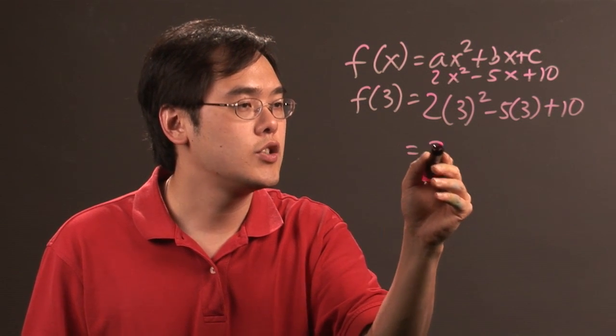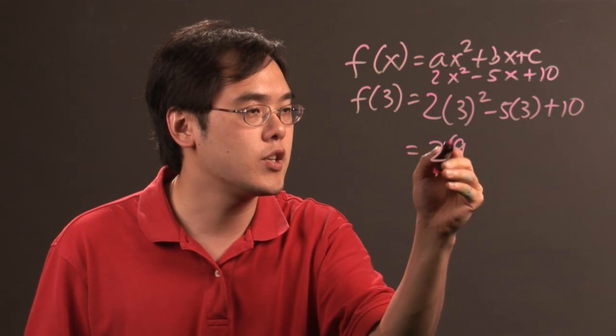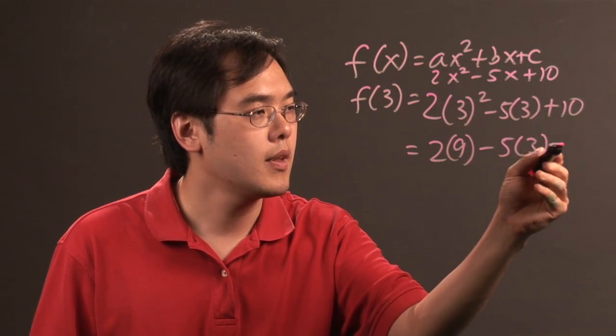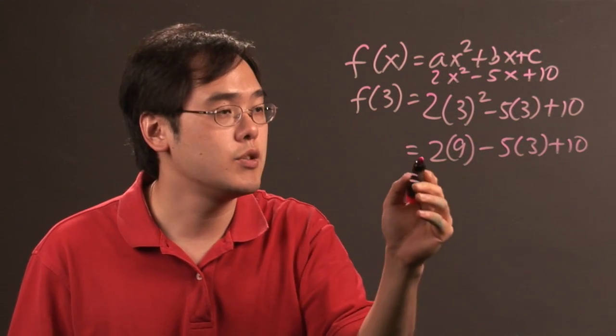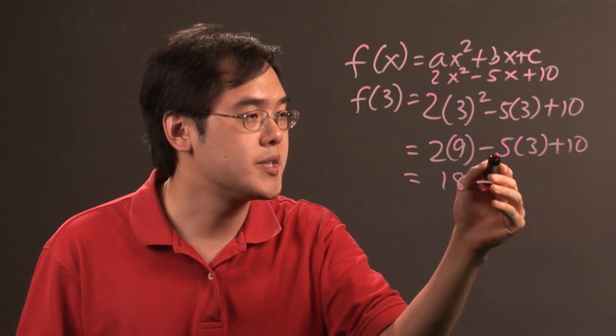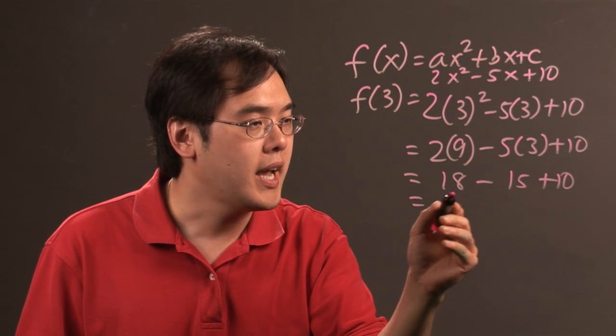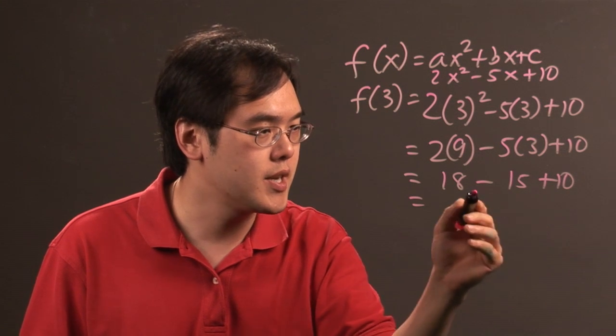You're going to have 2 times, well 3 squared is 9, as long as you follow your order of operations you'll be okay. And then after that just do the multiplication. 2 times 9 is 18 minus 5 times 3 is 15 plus 10. Now 18 minus 15 is 3 plus 10 is going to give you 13.